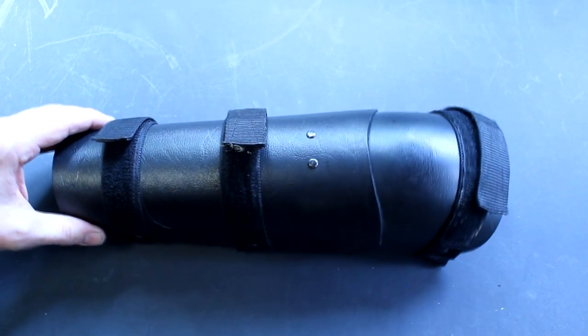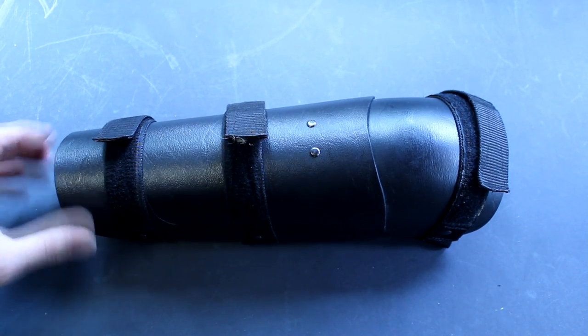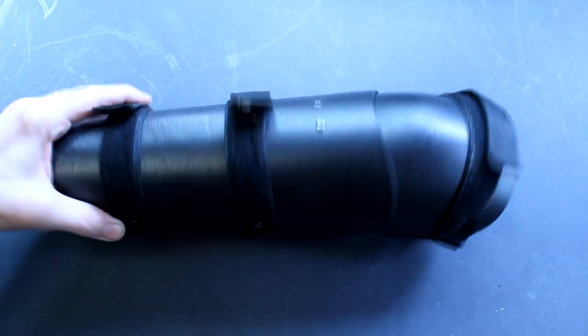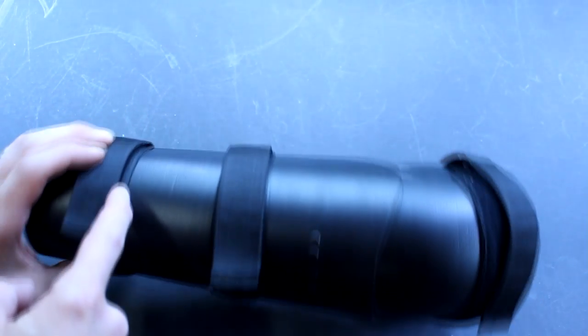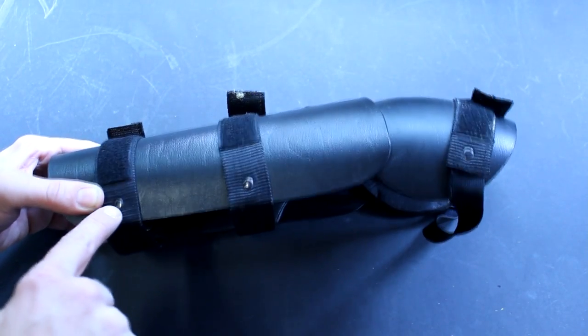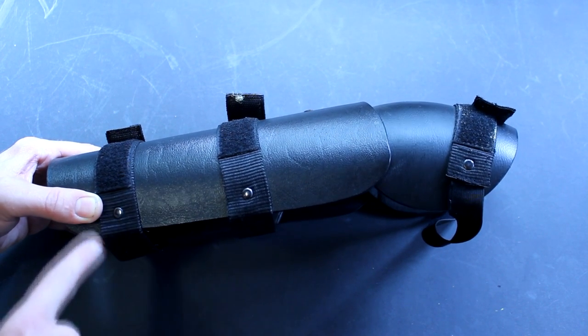What I want to do with this is to bulk it up, so rather than having a very plain arm guard like this, I'm going to add additional padding to give it more size. So the first step is to detach these straps from the outer part of the guard by drilling through the rivets here and separating the fabric from the plastic.